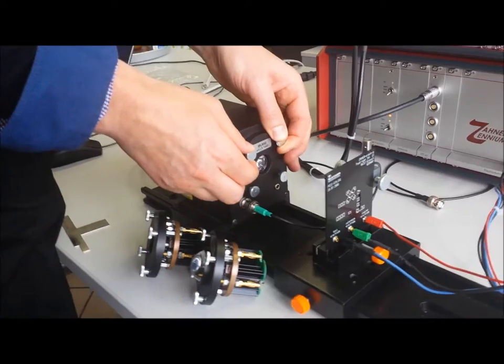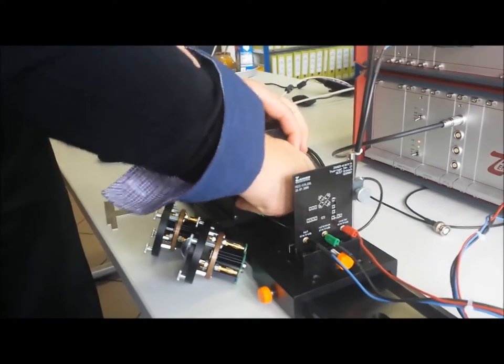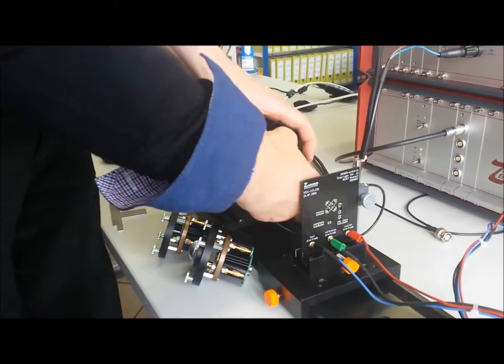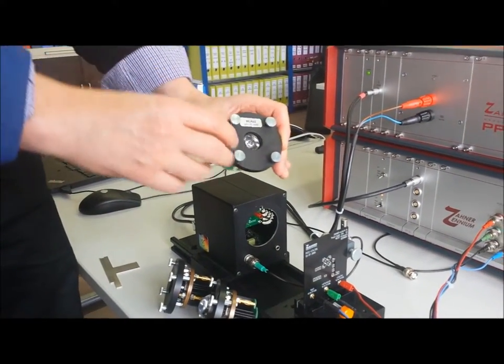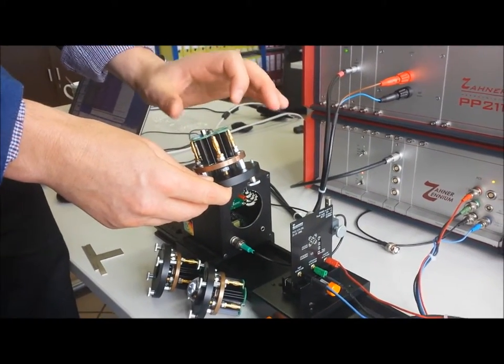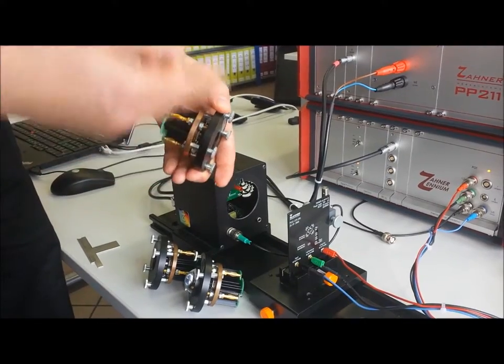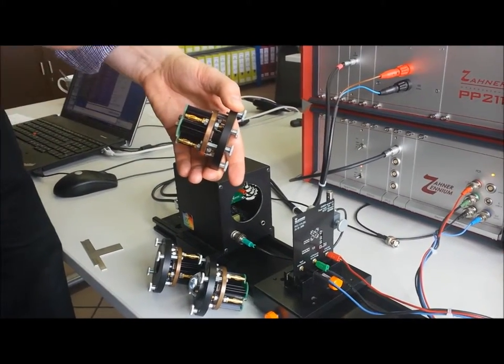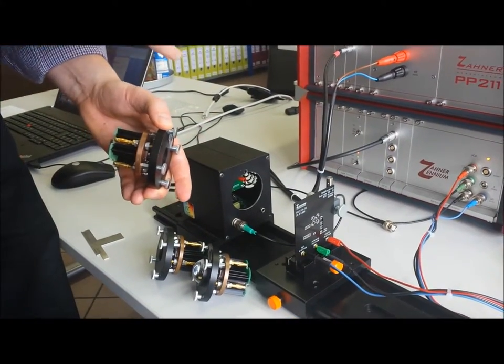If you want to change the light source, it's very simple. You can just pull these out. They're smart, so there's a communication between this device and the box, and all the calibration factors and parameters are transferred and read by the software.